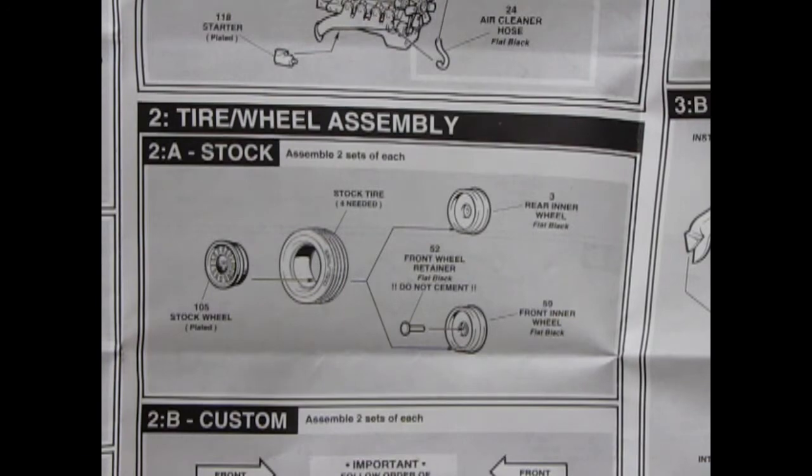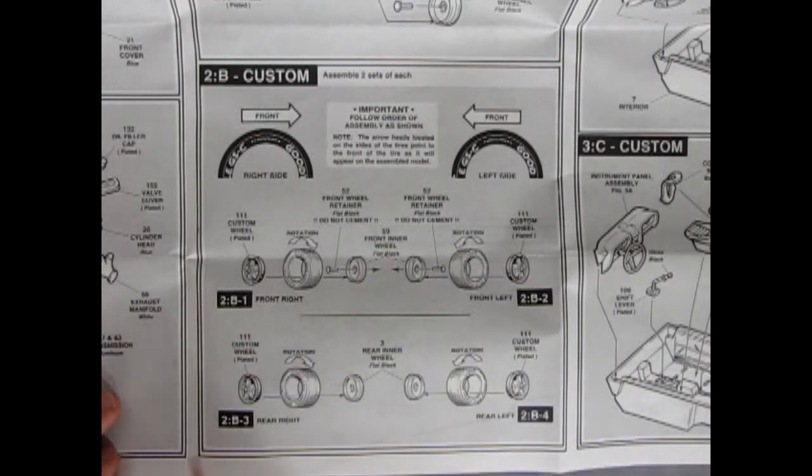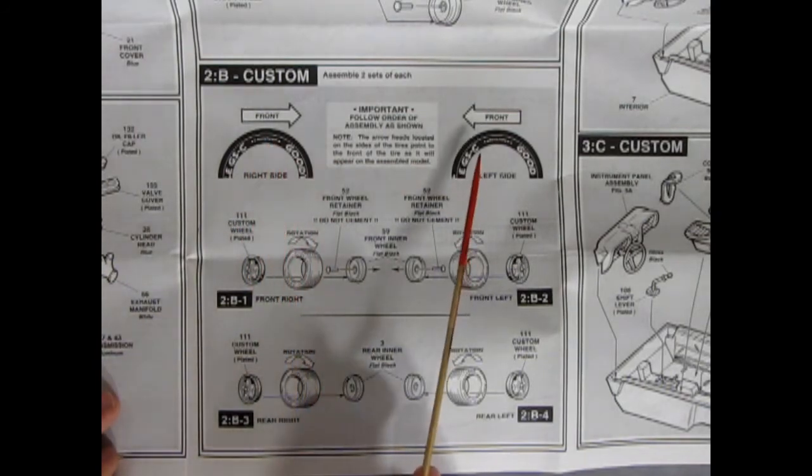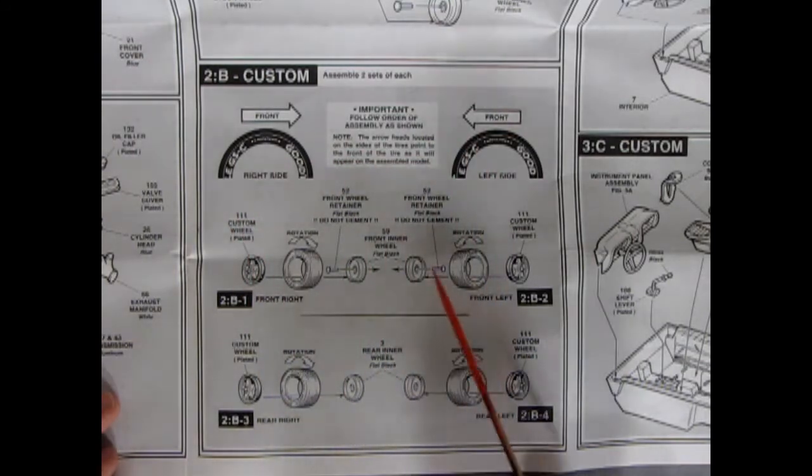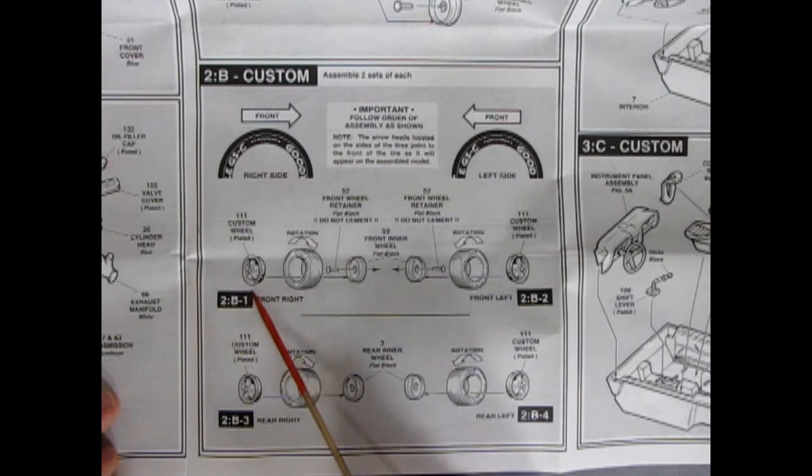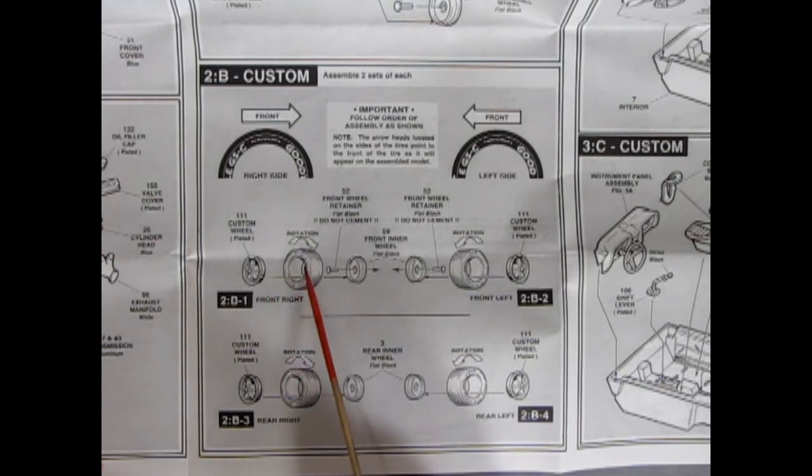And then we get into our new tires coming up. Now this kit must have had a revamp in the late 90s, early 2000s, because here we have our Goodyear Eagle type tires. These are directional. So it says follow order of assembly as shown. Note the arrowheads located on the sides of the tires. Point to the front of the tire as it will appear on the assembled model. So these had to go a certain way on the left side and the right side. And then we have our custom 90s, early 2000s type chrome wheel going on here, which I do believe some of these were in the Corvettes. Same as these tires were in the Corvette kits. And then our front wheel retainer, which is a pin, and the wheel backs and all that. And then in the rear, of course, we have the solid wheel backs going in. But again, it says to watch that rotation.